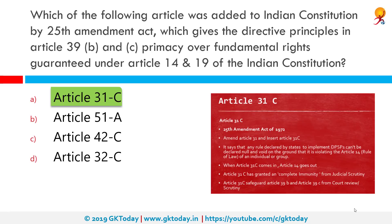Article 31C had two parts. The first part protected a law giving effect to the policy of the state towards securing the principles from being challenged on the grounds of infringement of fundamental rights. The second part of Article 31C originally sought to oust the jurisdiction of the courts to find out whether the law in question gave effect to the principles of Article 39B and C.